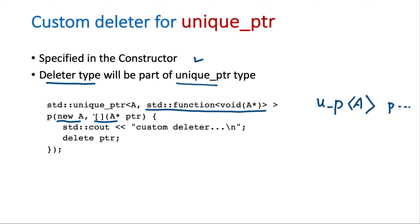And then while instantiating this pointer, we can provide the deleter in any of those ways. Like here we have used the lambda function. We could have also used the functor or the function pointer. So this part is additional that we need to specify the deleter type in the unique pointer type itself.